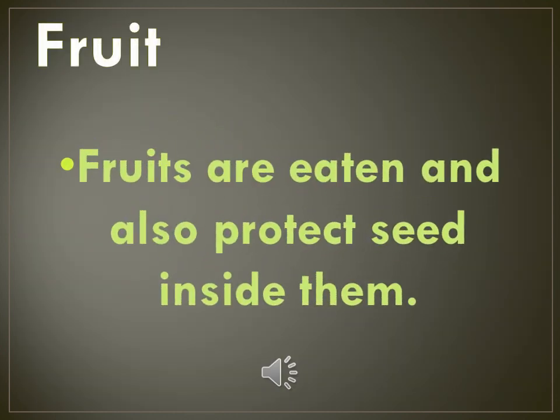Coming to the next part of the shoot system — that is fruits. As I have told you, flowers give rise to fruits. Fruits are the sweet and fleshy product of a plant that can be eaten as food, and they contain seeds inside them.